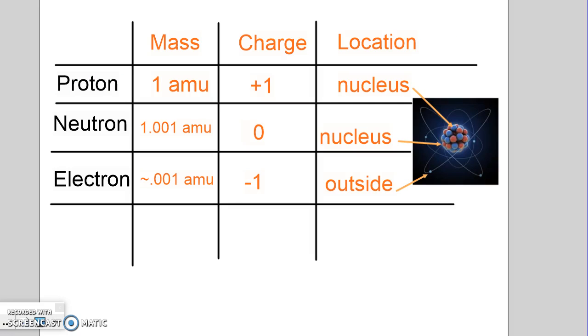So let's review our little chart. We're interested this time in the charge column. Now if we look, protons have a plus one charge, and electrons have a minus one charge.